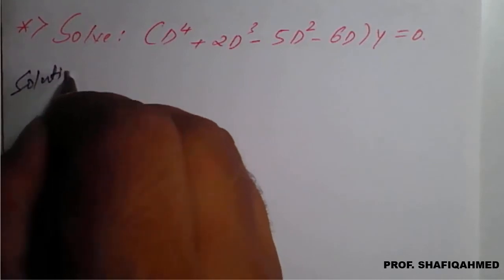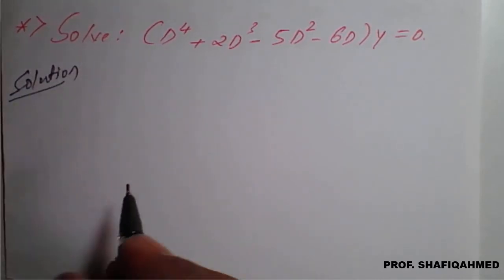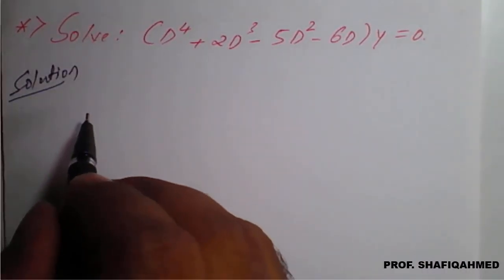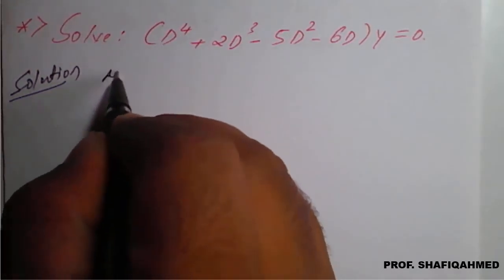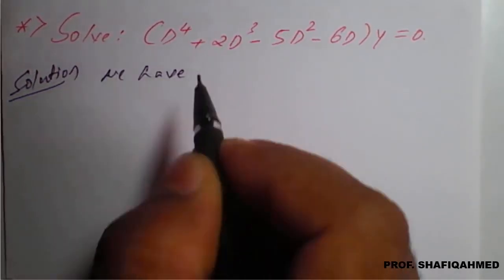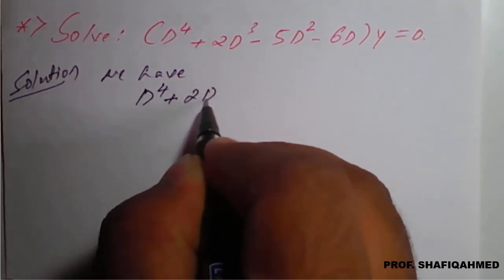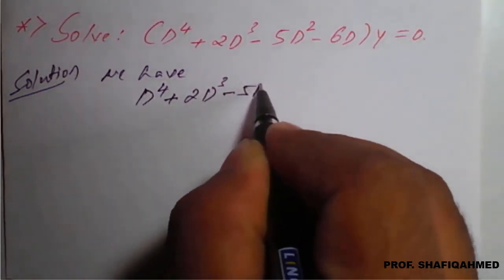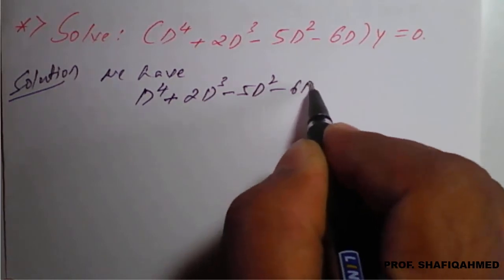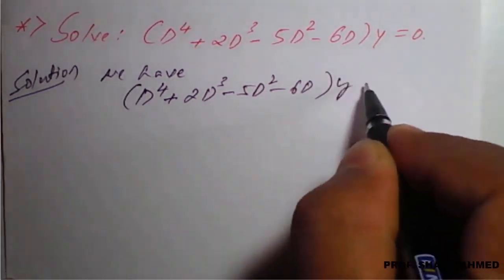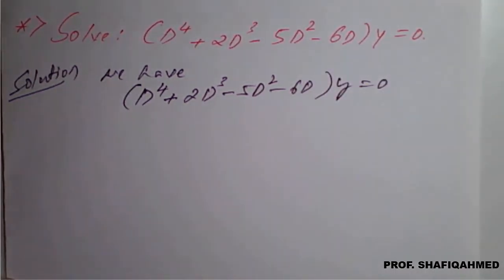The given equation is already in standard form. Therefore, we have the equation d⁴ + 2d³ - 5d² - 6d of y equal to 0. Next, the auxiliary equation is...